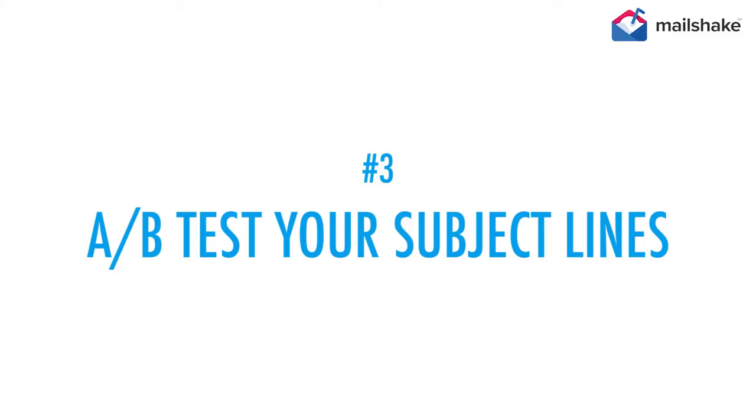Number three: A/B test your subject lines. You can ask a question like 'Interested?' or 'What would you do with 50% more leads?' Another approach is to go short — less than 30 characters. A study at Mailshake with over 100 million emails shows that subject lines under 25 to 50 characters get significantly higher open rates. Things like 'Quick question' or '10 minute chat' can go a long way. Alternatively, go long — more than 60 characters — like 'Fix your churn problem today' or 'Your clients will love our latest research.' The more specific you are, the better.